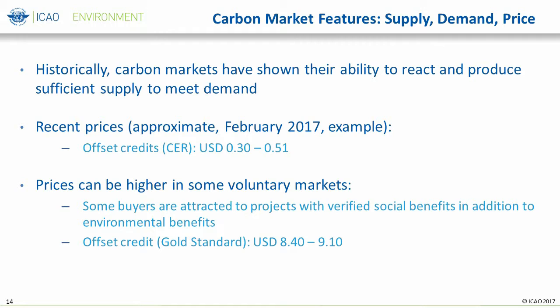Historically, carbon markets have adjusted by creating supply to meet demand. Recent prices for emission units, or offset credits, range from a third to a half of a US dollar. However, prices can also be higher in some voluntary markets where social benefits are included in the cost, which is attractive to some buyers. Please note that the prices here are just an example and do not indicate this will be the price range for eligible emission units, as that price will be determined by the market. These figures are merely a means to provide a historical sample for illustration.